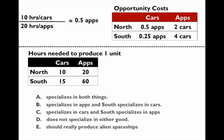Once the opportunity costs are correctly calculated, it's just a matter of choosing which country specializes based on the lowest opportunity cost. The country with the lowest opportunity cost for cars will produce cars, and the country with the lowest opportunity cost for apps will produce apps. In this case, cars are going to be produced by the South because their opportunity cost is 0.25 apps, and apps are going to be produced by the North because their opportunity cost is two cars. So the North specializes in apps and the South specializes in cars — that's answer B.